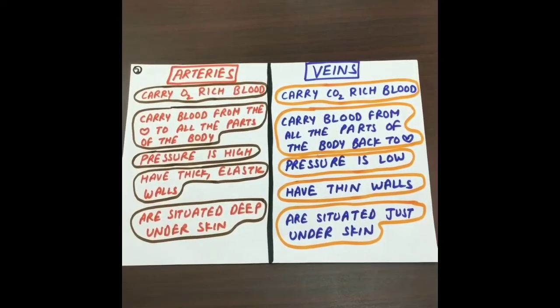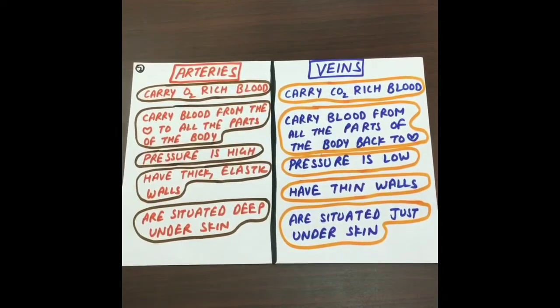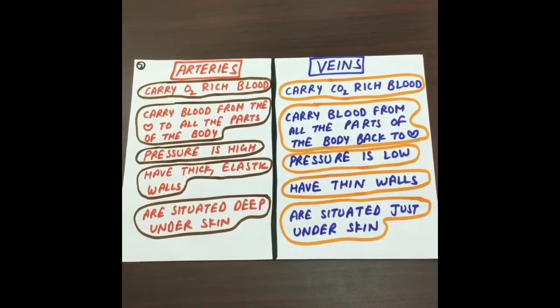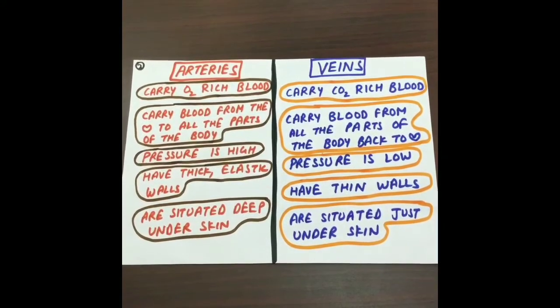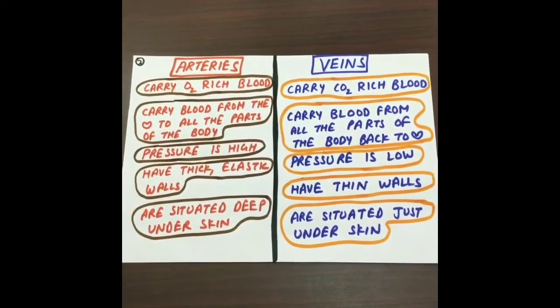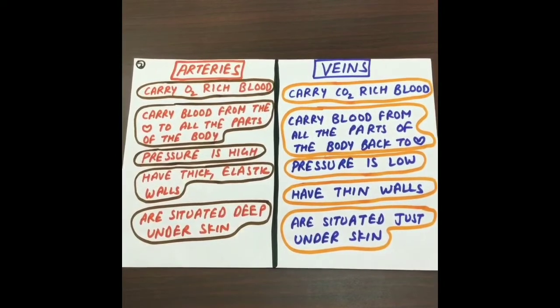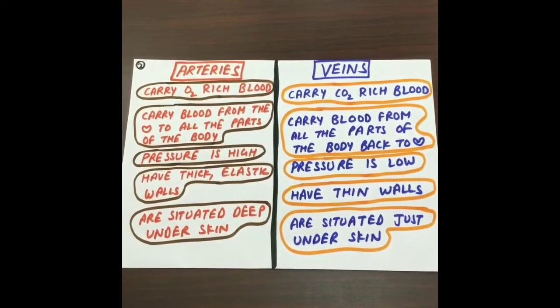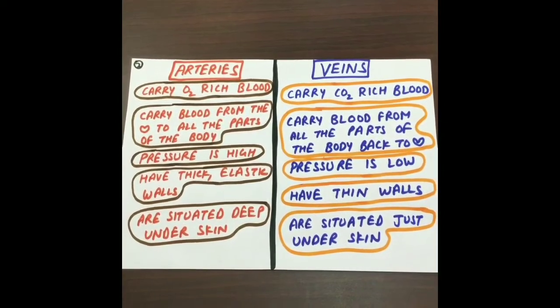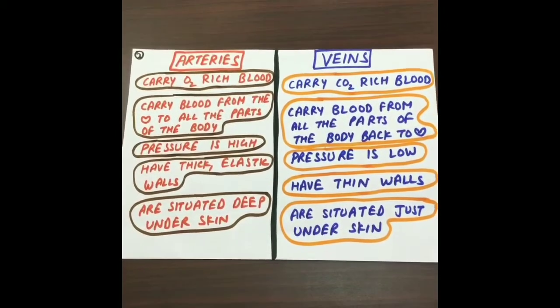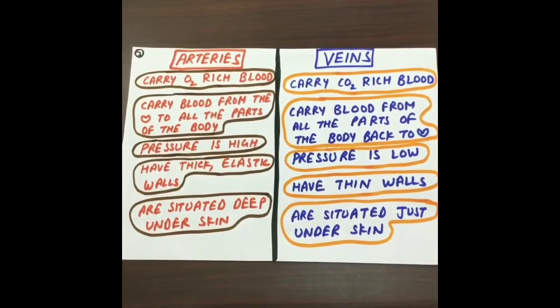Now we know what blood is. So let's learn about the vessels in which blood flows. There are two types of blood vessels: arteries and veins. Arteries carry oxygen-rich blood while veins carry carbon dioxide-rich blood. Arteries carry blood from the heart to all the parts of the body while veins carry blood from all the parts of the body to the heart. In arteries, the pressure is high, while in veins, the pressure is low. Arteries have thick elastic walls while veins have thin walls. Arteries are situated deep under the skin while veins are situated just below the skin.